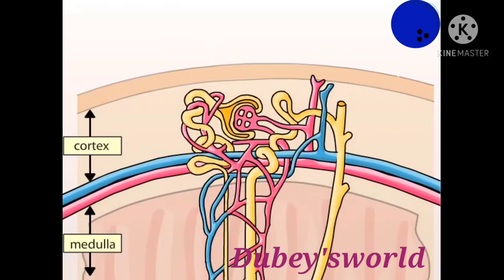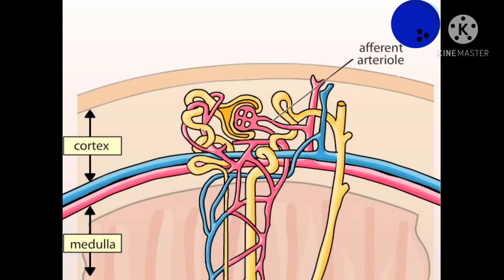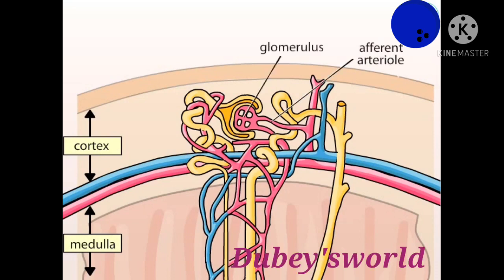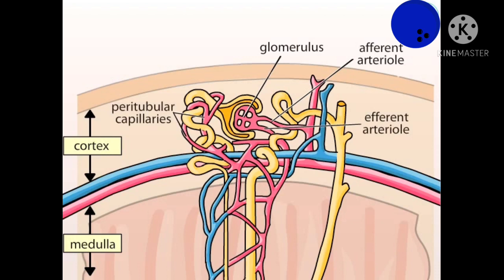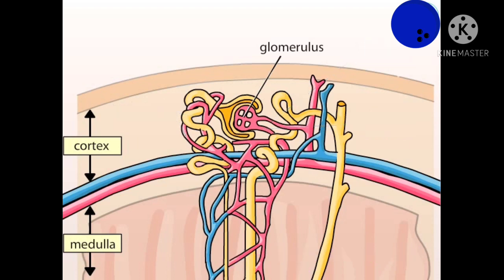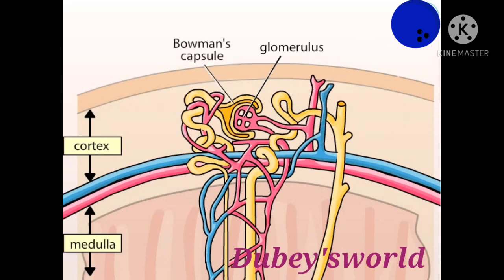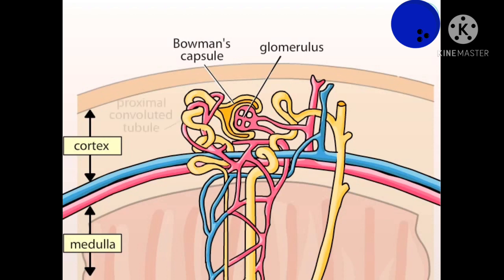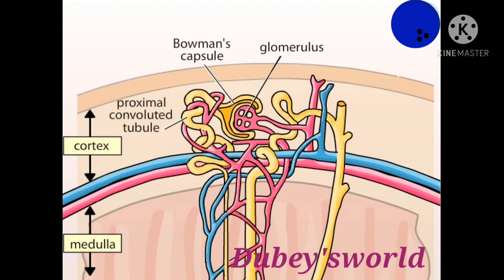Each nephron consists of vascular and tubule components. An afferent arteriole carries blood to a knot of capillaries called the glomerulus. Draining each glomerulus is an efferent arteriole that gives rise to the peritubular capillaries, most of which surround the cortical portions of the nephron tubules. Blood pressure forces water and small molecules to be filtered from the glomerulus and collected in Bowman's capsule. The initial segment of a renal tubule is called the proximal convoluted tubule. The glomerulus, Bowman's capsule, and proximal convoluted tubule of each nephron are located in the cortex.